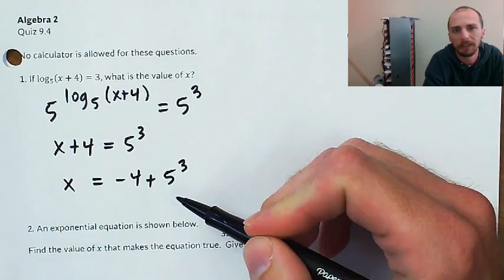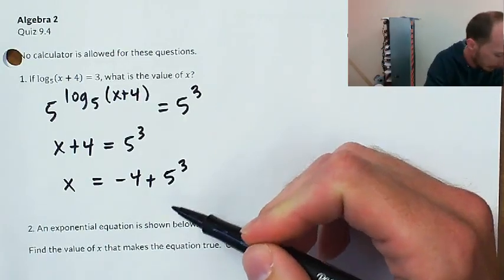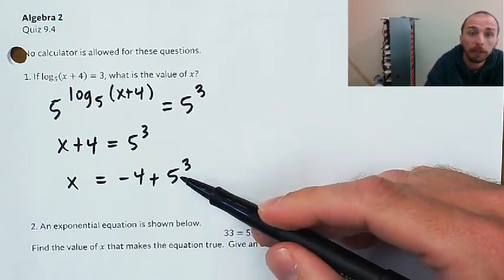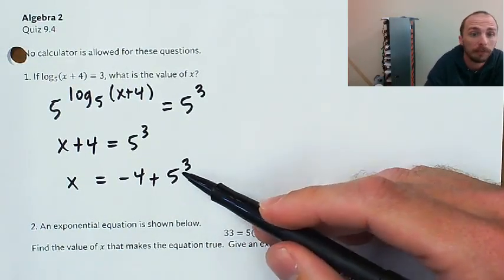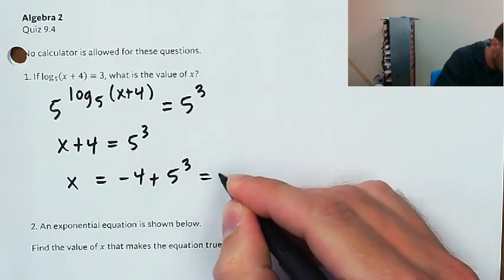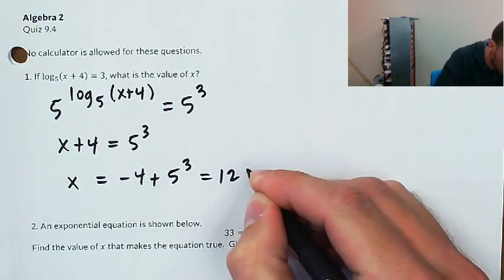This would be an exact answer, but we can do a little better. We know that 5 to the 3rd is 125, so if I take 125 and subtract 4, that will be 121.